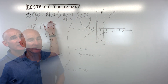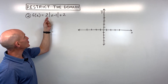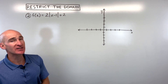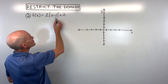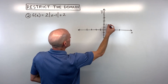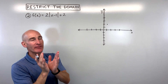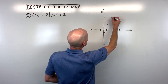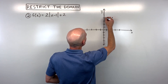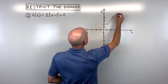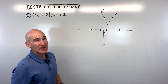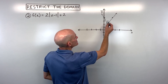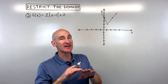Let's take a look at another example. For example two, we have f of x equals 2 times the absolute value of x minus 1 plus 2. Let's start by graphing this. We know the graph goes right 1, up 2 — that's where the vertex of the absolute value graph is — and it's stretched vertically by a factor of 2, so it has a slope of 2, going up 2 over 1. Now when we look at this we can see it's failing the horizontal line test, meaning for a given y value there's more than one x value, so the inverse is not going to be a function.